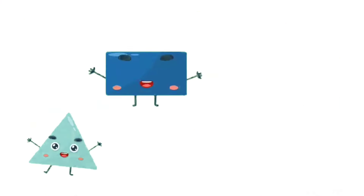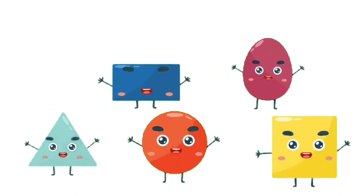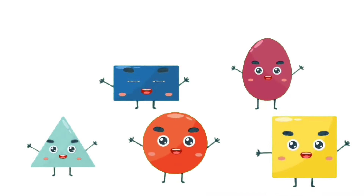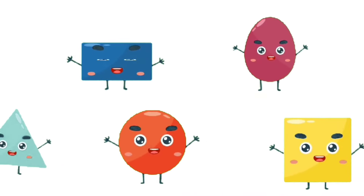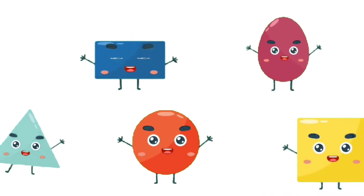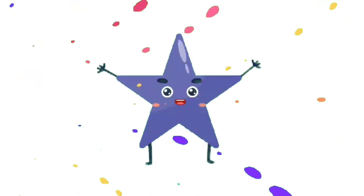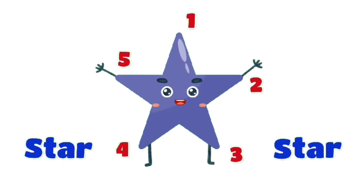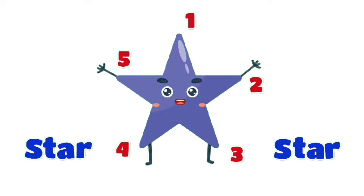Triangle, rectangle, circle, oval, square. Triangle, rectangle, circle, oval, square. I'm a star with five points, five little points. I'm a star with five points, five little points. Five little points, I'm a star with five points, twinkling in the sky.